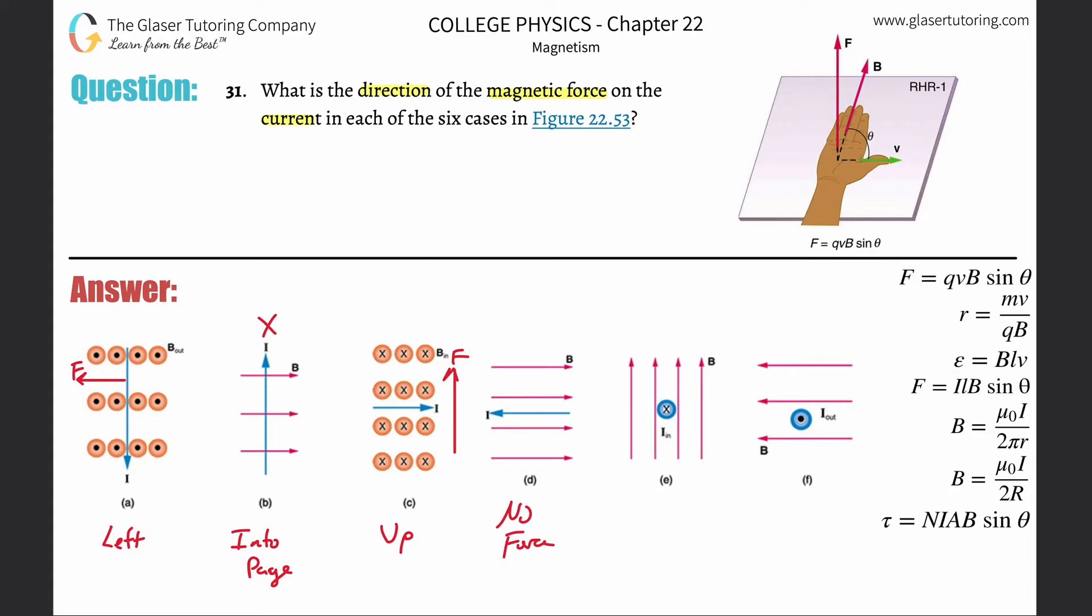Letter E here, we have the thumbnail pointing into the computer screen. Take your thumb, point it towards the computer, and then take your fingers and point them up to the ceiling to represent the magnetic field. If you're in that position, your palm now should be pointing to the right, meaning the force on that current is going to be to the right.